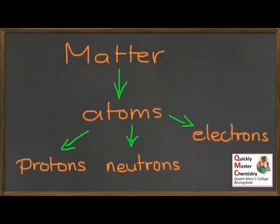We have three basic subatomic particles: protons, neutrons and electrons. Of course, if you were to study physics, you would look even deeper and see that those subatomic particles themselves are made up of even smaller particles. But you don't need to concern yourself with that at this level for chemistry.